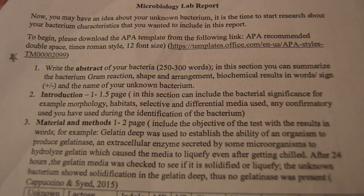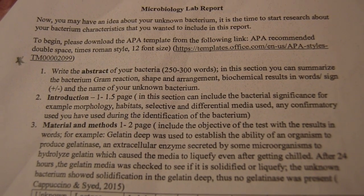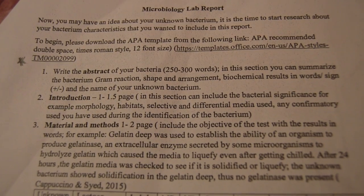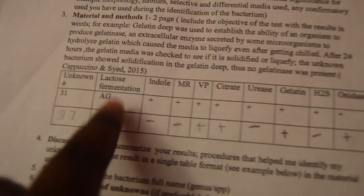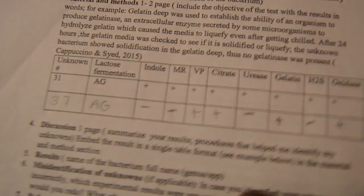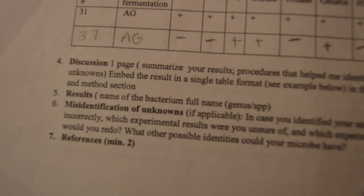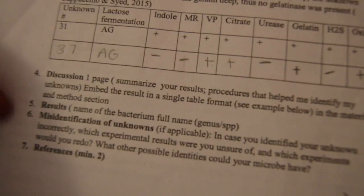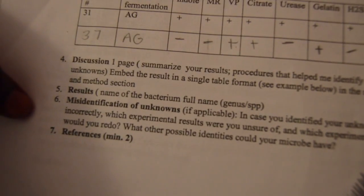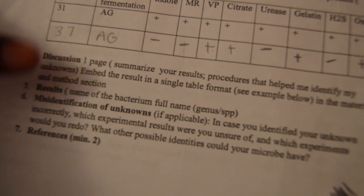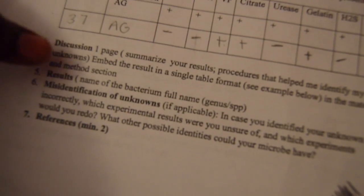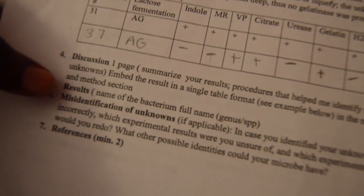The lab report follows specific guidelines — the teacher wants an abstract, introduction, materials and methods, a chart of results, a discussion, and a misidentification section. In my class, if you get the unknown wrong but explain it well, you can get a 90. If you get it right, you can get a 95 to 100.